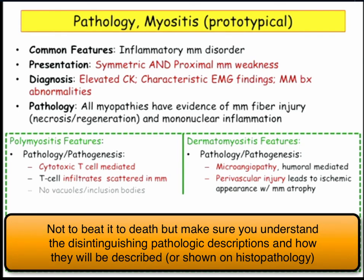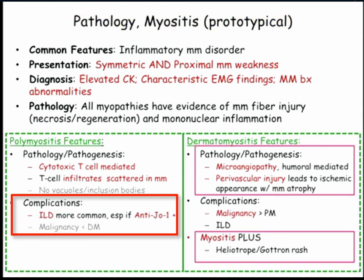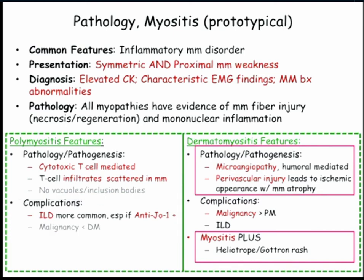Two completely different diseases that happen to share a common presentation. Complications: with polymyositis, be aware of interstitial lung disease, which is more common compared to malignancy with dermatomyositis. The NXP-1 antibody does somewhat predict interstitial lung disease with polymyositis. Dermatomyositis is more commonly associated with malignancy, and dermatomyositis can actually be the presenting symptom of malignancy.